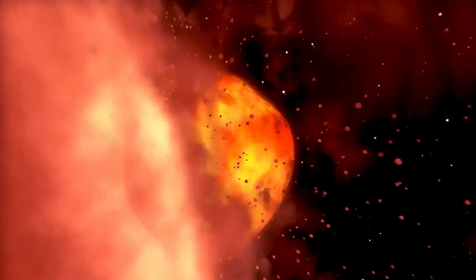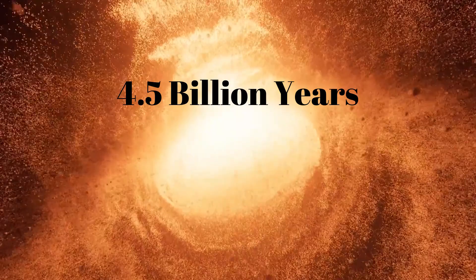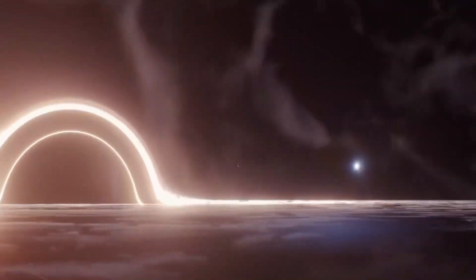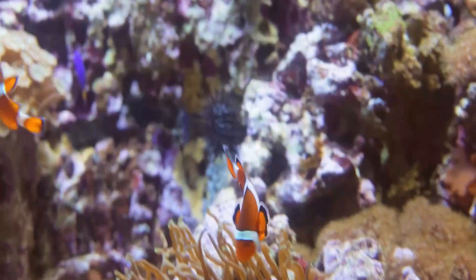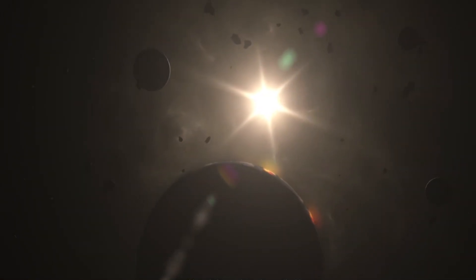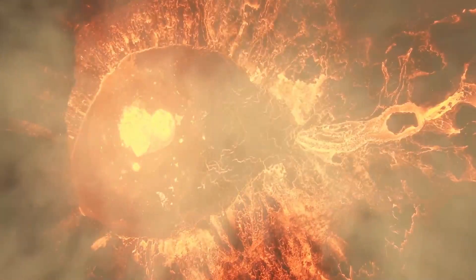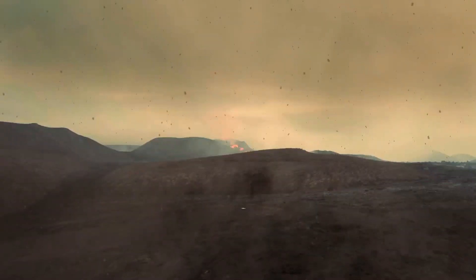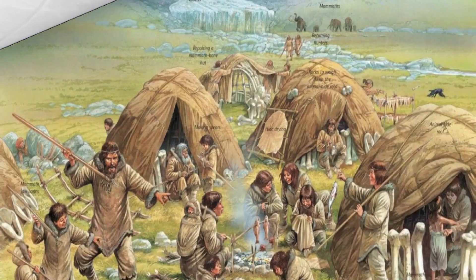Earth's evolution is a grand narrative, spanning an astonishing 4.5 billion years. This intricate saga encompasses a series of interwoven geological, biological, and climatic transformations that have sculpted our planet into the vibrant, diverse world we know today. Delving into the annals of Earth's history, we encounter pivotal stages that have defined its course. From its fiery inception to the emergence of complex life forms and the advent of Homo sapiens, each epoch holds a unique tale to tell.